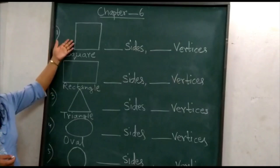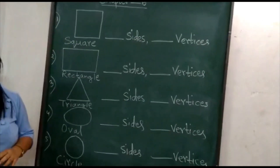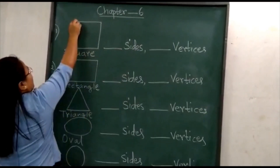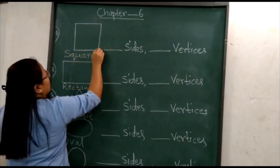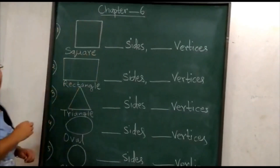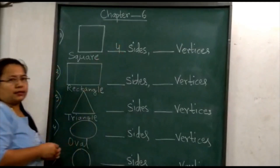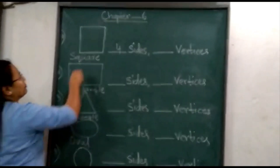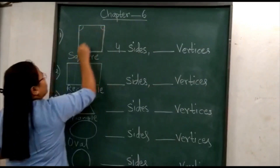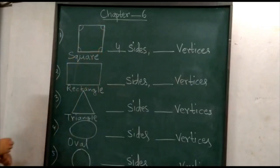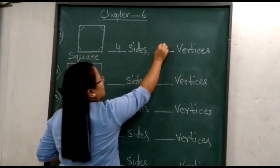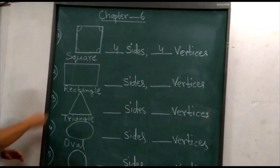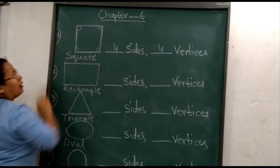Let's begin with a square. How many sides and vertices does a square have? Sides: 1, 2, 3, 4 — 4 sides. A square has 4 sides. And vertices: 1, 2, 3, 4 — 4 vertices. So a square has 4 sides and 4 vertices. All the sides of the square are equal.